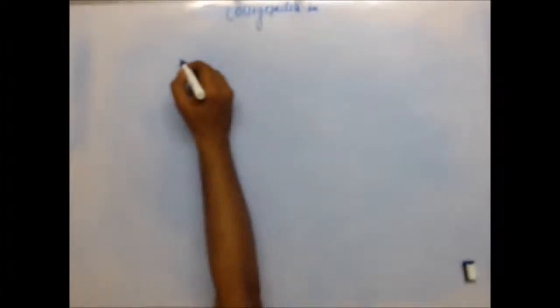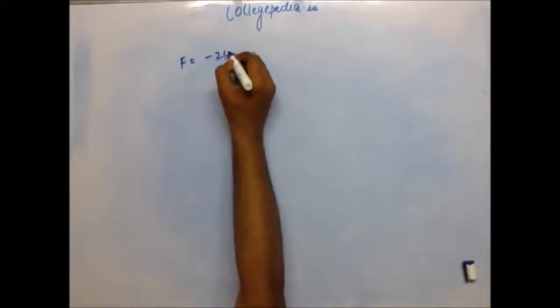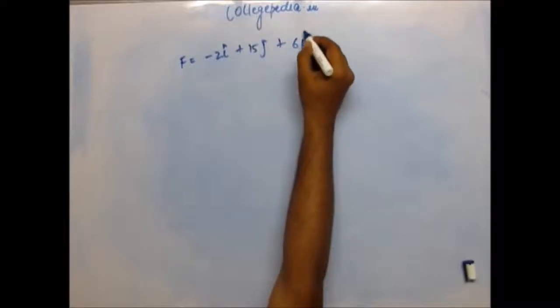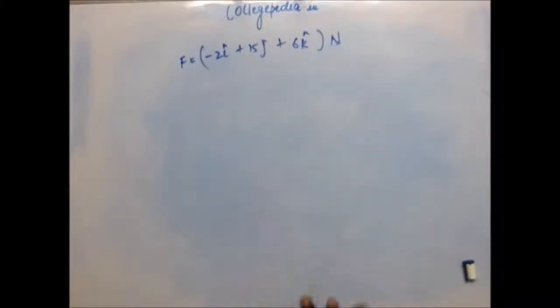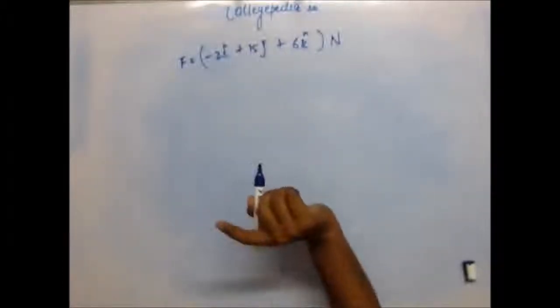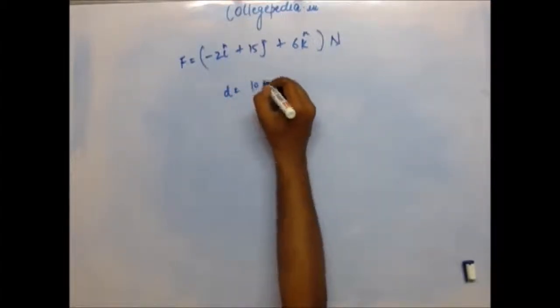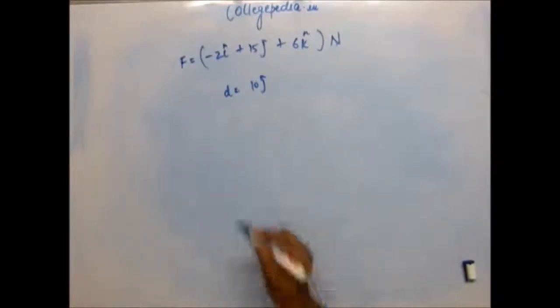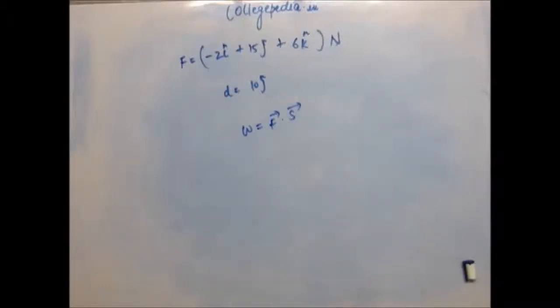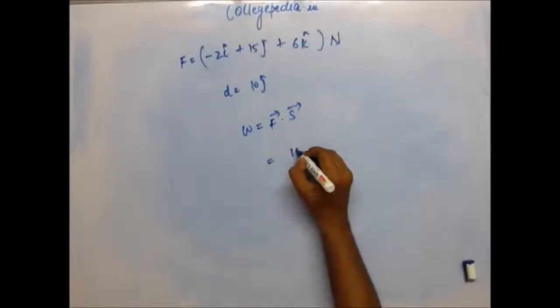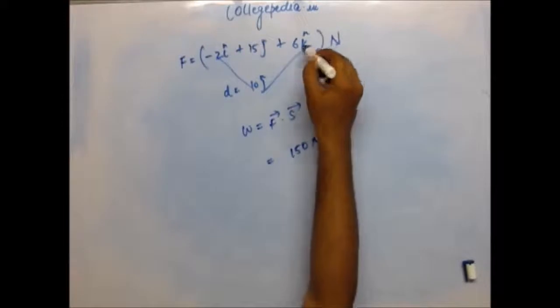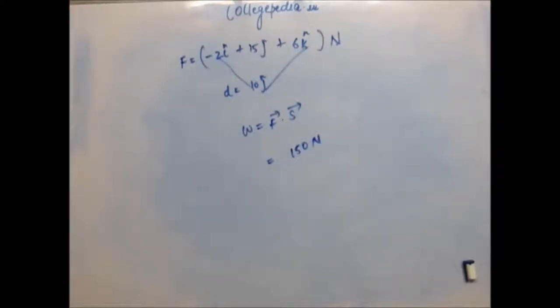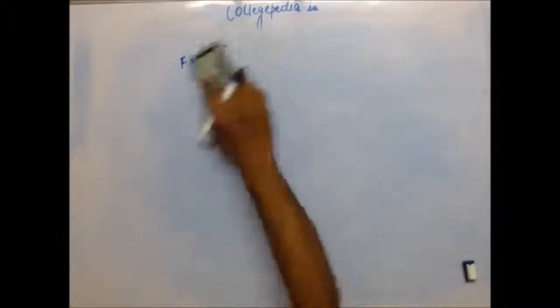Now I am giving a problem based upon the Cartesian form of a vector. Force and displacement are vectors and we can represent them in Cartesian form as well. Suppose force has been represented as minus 2i-cap plus 15j-cap plus 6k-cap newtons, and the displacement which this force has caused is 10j-cap — meaning displacement is along the y-axis. Work done is simply force vector dot displacement vector. You just have to do the dot product of these two vectors. The i and k components give 0, and j-cap into j-cap is 1, so the answer is 150 newton.